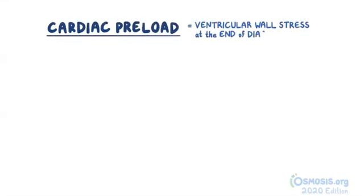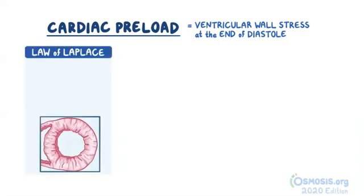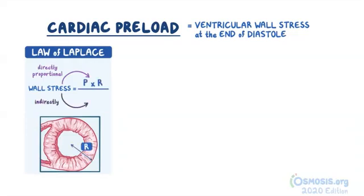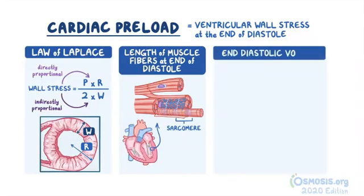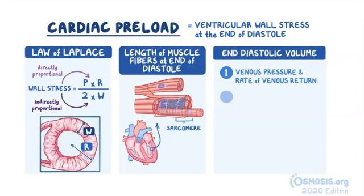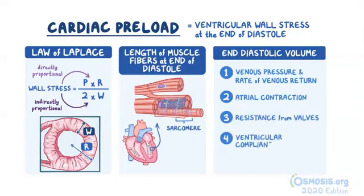As a quick recap: preload is the ventricular wall stress at the end of diastole. Via the law of Laplace, wall stress is directly proportional to end-diastolic pressure and radius, and indirectly proportional to 2 times ventricular wall thickness. Alternatively, preload equals sarcomere length at end-diastole. In clinical practice, end-diastolic volume is used to assess preload. It is affected by five factors: venous pressure and rate of venous return, atrial contraction, resistance from valves, ventricular compliance, and heart rate.